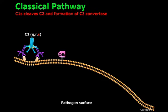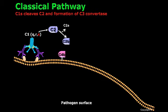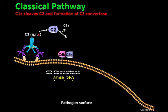C1S of the C1 complex can also cleave C2, generating C2a and C2b. If C2b is close enough and binds C4b, it will generate a complex called C3-convertase, or C4b-C2b.